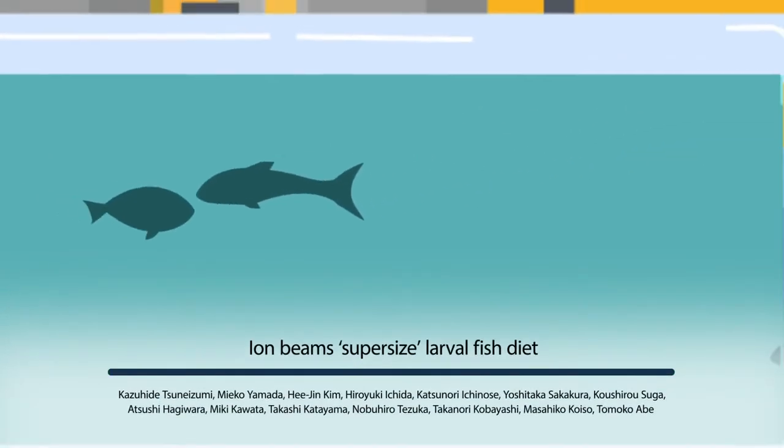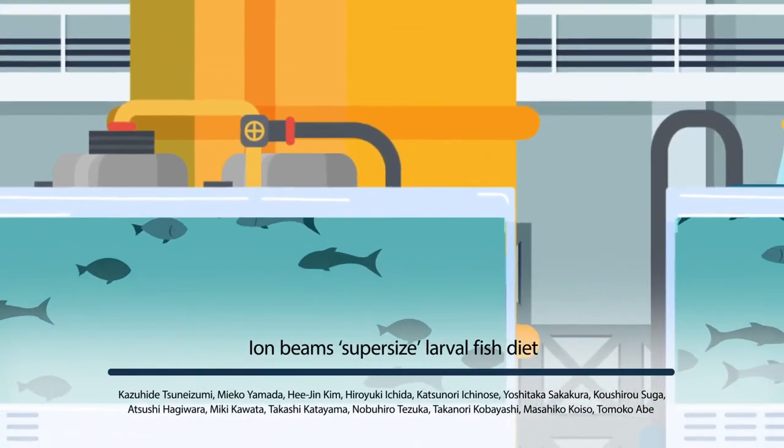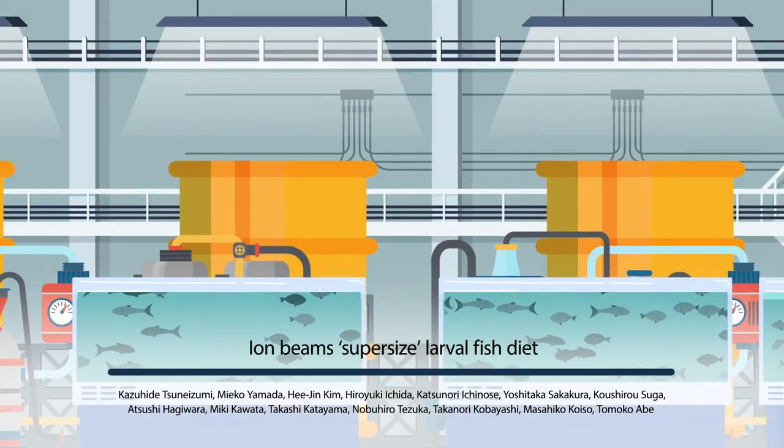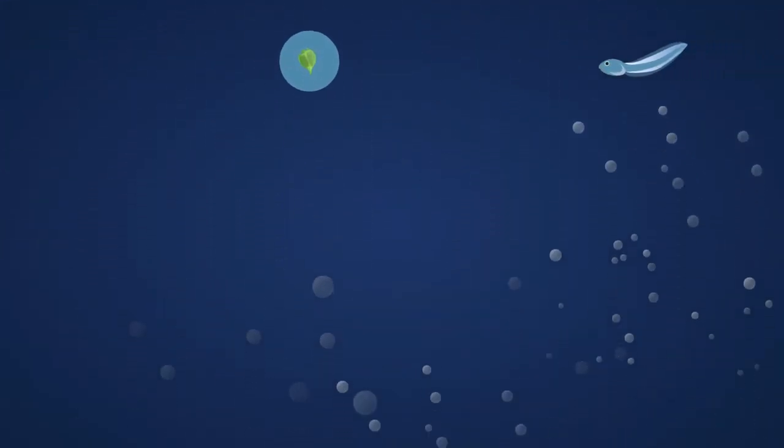One key to good fish breeding is providing fish with the right food. That means getting the right sized food. As fish larvae grow, so does the optimum size of their food.